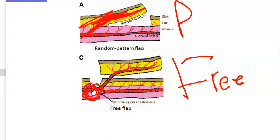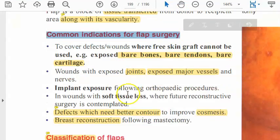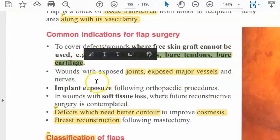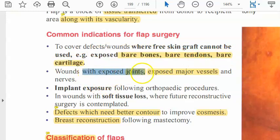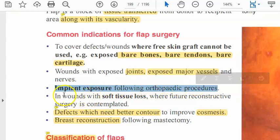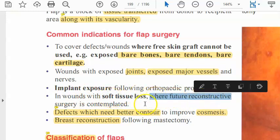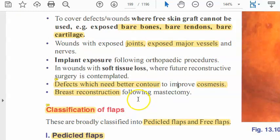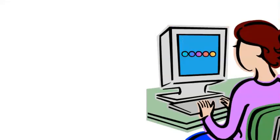When will you do flap surgery? The indications are: wherever you cannot do a free skin graft because there is an exposed bare bone, bare tendon, bare cartilage, or no vascularity; exposed joints; exposed major vessels and nerves; implant exposure following orthopedic procedures; wounds with soft tissue loss; and defects which need better contour to improve cosmesis, especially in breast reconstruction following mastectomy.